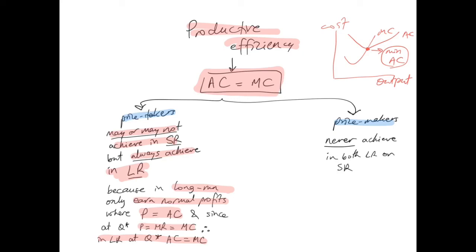Price makers never achieve productive efficiency in either the short run or the long run, because they deliberately restrict output. Having some control over price means the firm focuses more on maximizing profit rather than increasing efficiency or lowering its costs.